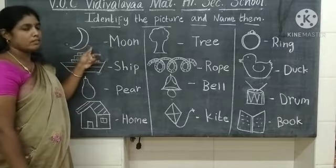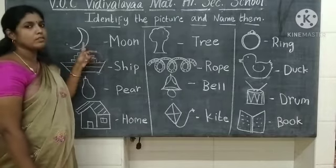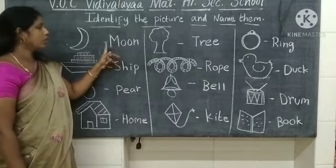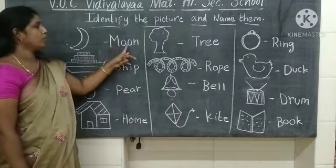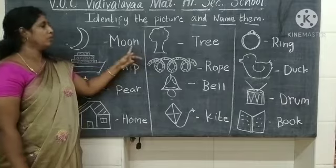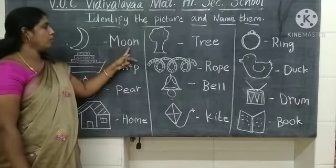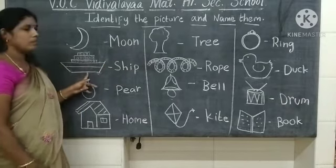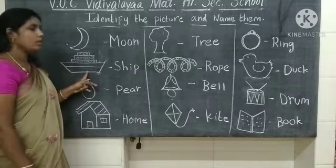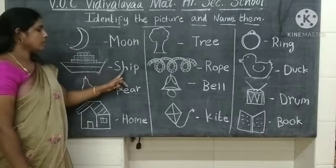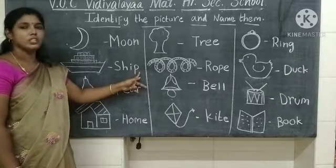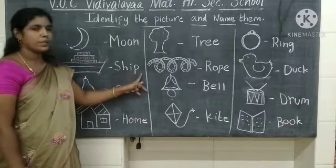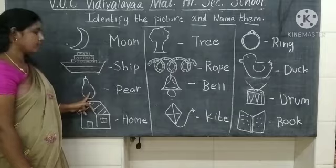What picture is this? This is a moon. What is the spelling of moon? M-O-O-N — moon. What picture is this? This is a ship. S-H-I-P — ship.